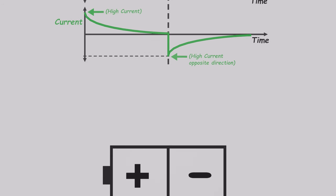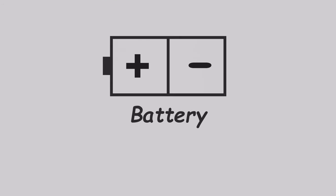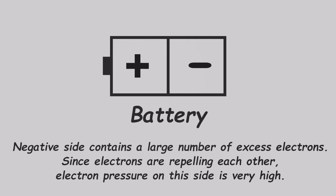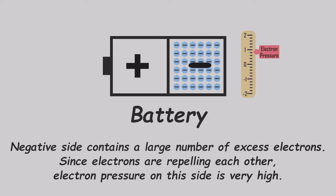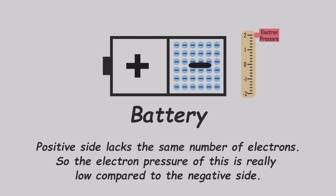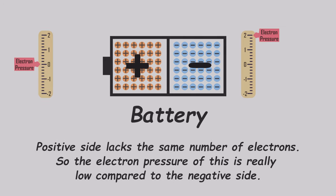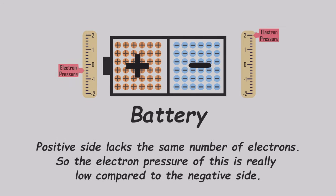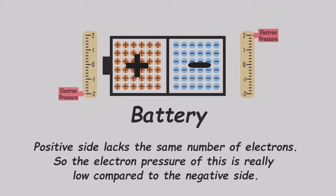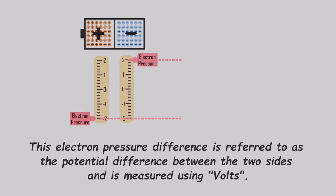Let's explore this further. Imagine a battery with positive and negative sides. The negative side holds a surplus of electrons, leading to high electron pressure. In contrast, the positive side lacks the same number of electrons, creating a lower electron pressure compared to the negative side. This difference in electron pressure is known as the potential difference, measured in volts.